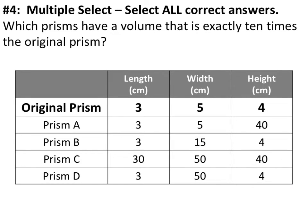Our next example is a multi-select, meaning there will be more than one right answer. It asks us to find prisms that have a volume exactly 10 times the original prism. The original prism has a length of 3 centimeters, a width of 5 centimeters, and a height of 4 centimeters. The correct answers are prism A and prism D.